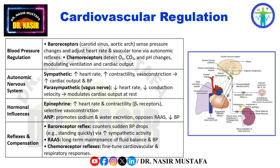Cardiovascular regulation: blood pressure regulation. Baroreceptors, located in the carotid sinuses and aortic arch, sense pressure changes and adjust heart rate and vascular tone via autonomic reflexes. Chemoreceptors detect changes in O2, CO2, and pH, modifying ventilation and cardiac output accordingly.